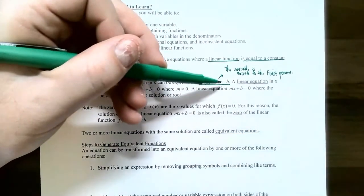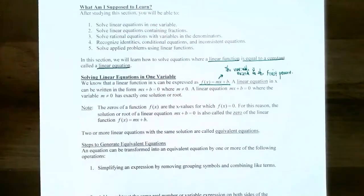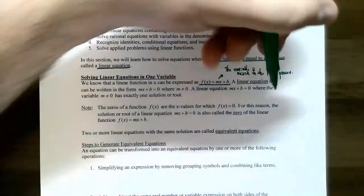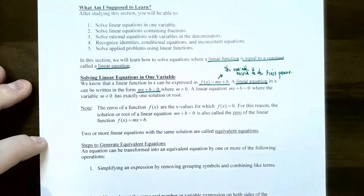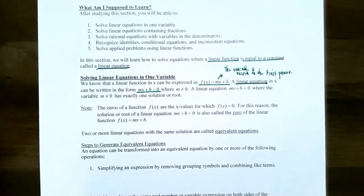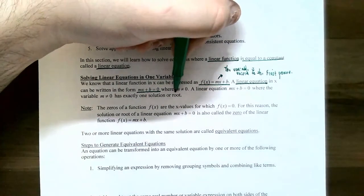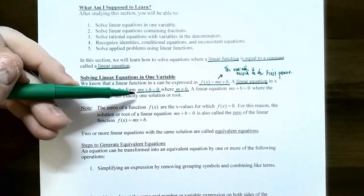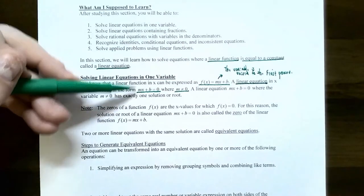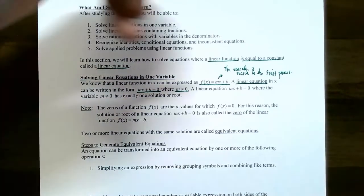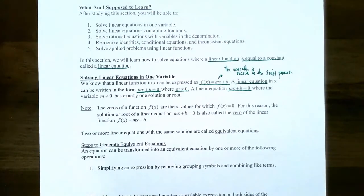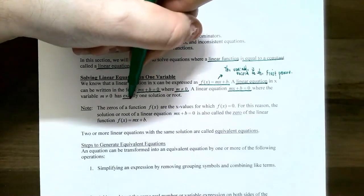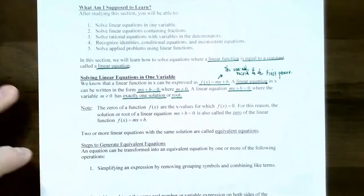So x is to the first power, m is the slope, and b is the y-intercept. In this section we'll look at linear equations with one variable x written in the form mx plus b equals zero, or equal to some constant, where m cannot be zero — you need to have an x term. If you have an equation of this form, it's called a linear equation, and importantly, you will have exactly one solution, sometimes called a root.